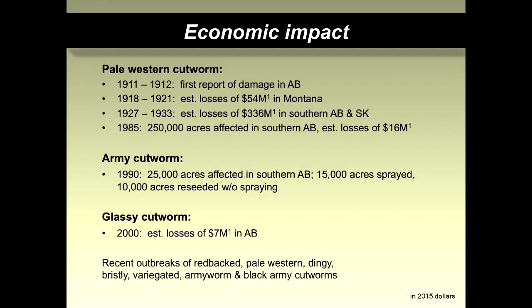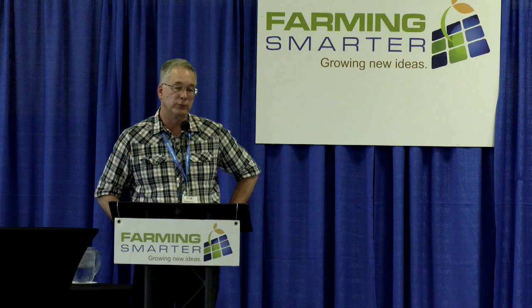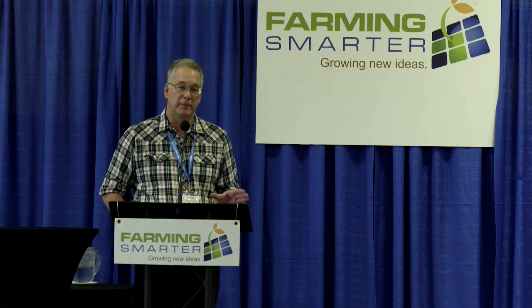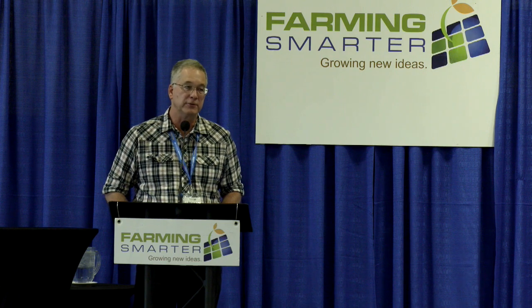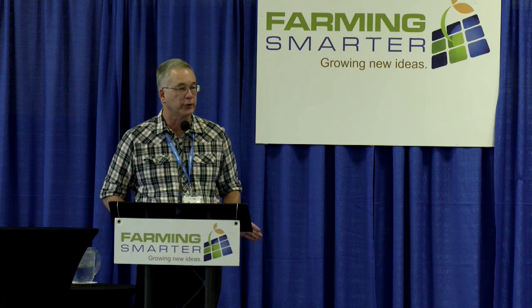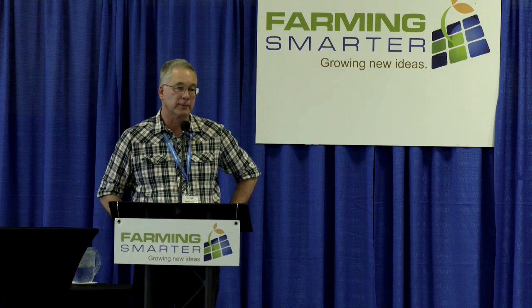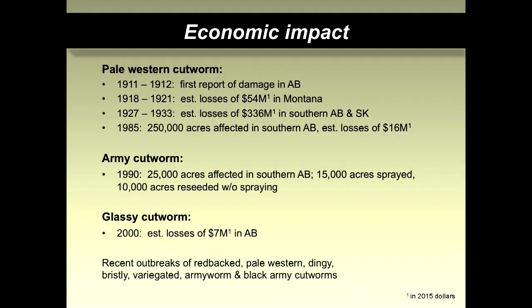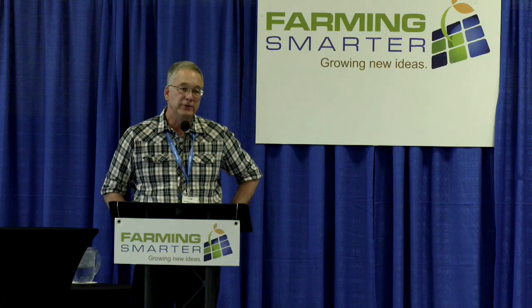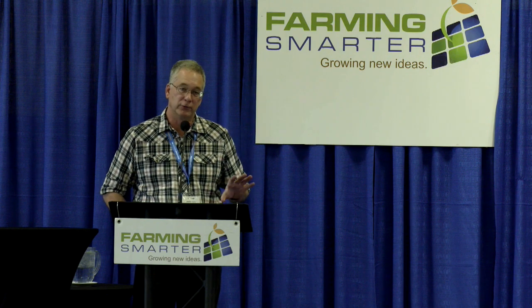Army cutworm: in 1990, an outbreak affected 25,000 acres in southern Alberta — about 15,000 acres were sprayed and the others were reseeded. Glassy cutworm in 2000 caused about $7 million in damage. These are just numbers found in published papers, but every year there are cutworm outbreaks from different species. It's very hard to predict when outbreaks will occur or which crops will be affected. In recent years, provincial entomology reports mention outbreaks of redback, pale western, dingy, variegated, and black army cutworms. The species of primary concern in Alberta differ from those in Saskatchewan and Manitoba — it varies by region.